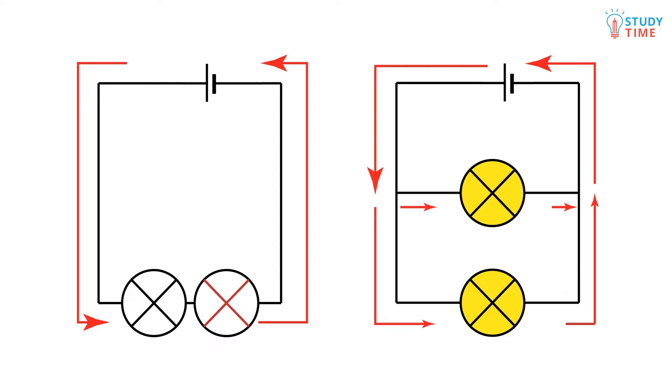We can avoid this problem by connecting the two bulbs together in parallel. That means each one of them is on a different branch of the circuit like this. Now some of the electricity is going to flow around the circuit through the bottom bulb and some of it is going to take the shortcut through the upper bulb.